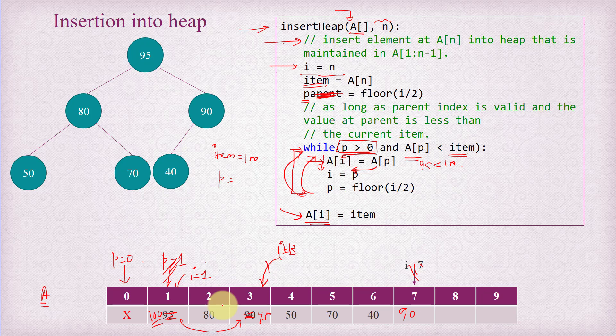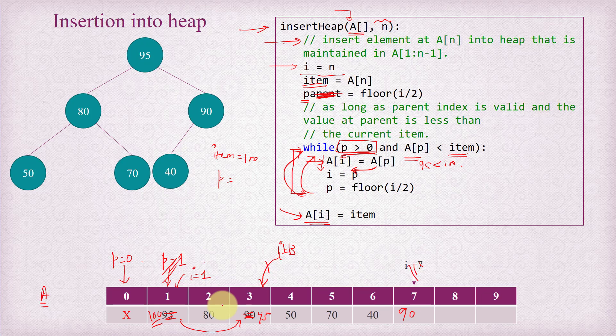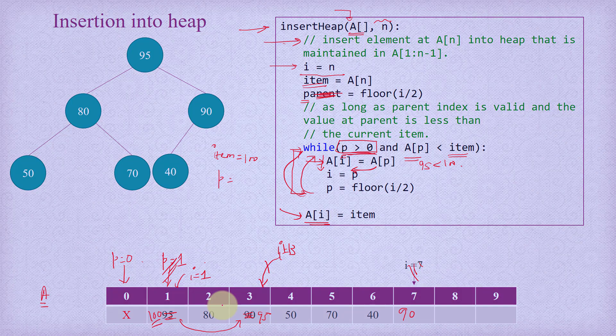I hope you've understood the heap insert operation clearly. Note that we don't actually need this heap insert operation for the implementation of heap sort — I explained it just to show how heap insertion works. We're going to build the heap from an unsorted array using the heapify operation, which uses the adjust operation that we'll understand later. In the next tutorial, we'll start with the heap delete operation, and after that we'll cover heapify as well. Thank you for watching.